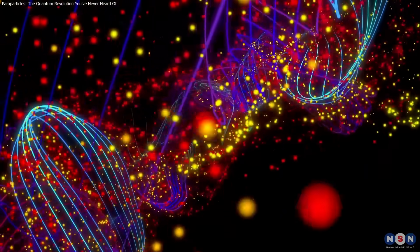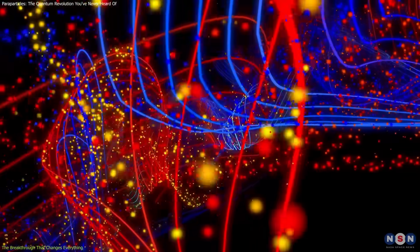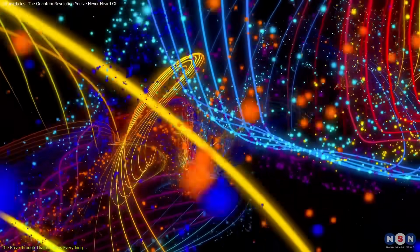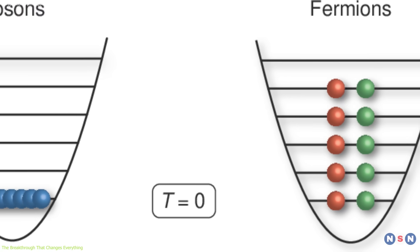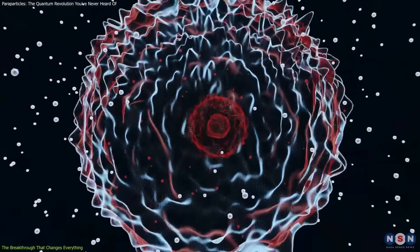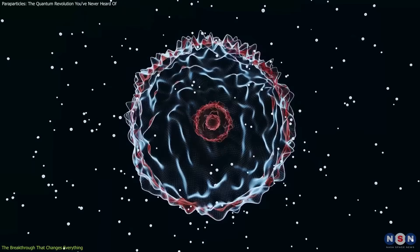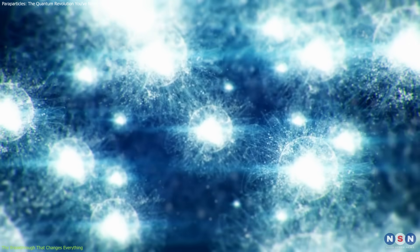For over a century, quantum physics has told us that particles fall into two categories: bosons and fermions. Think of bosons like the life of the party. They can share the same space, hanging out in groups. Photons, which make up light, are bosons.